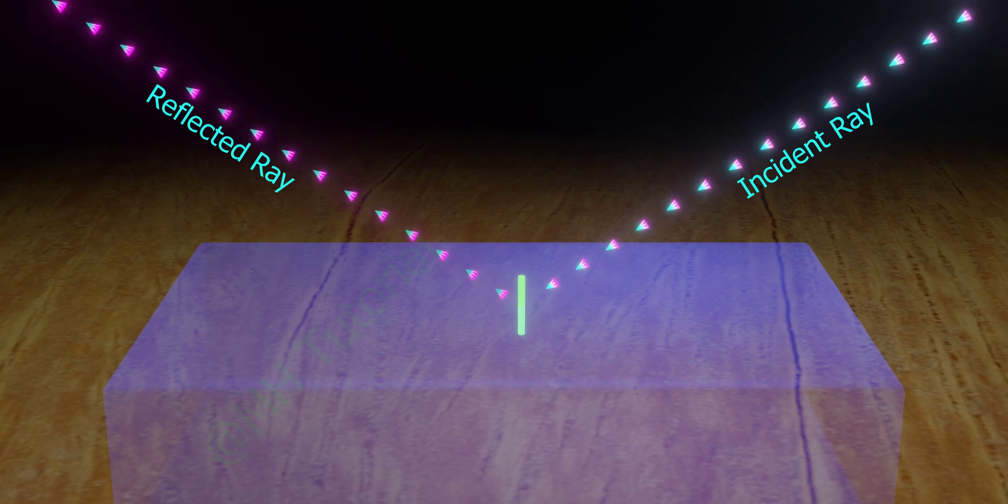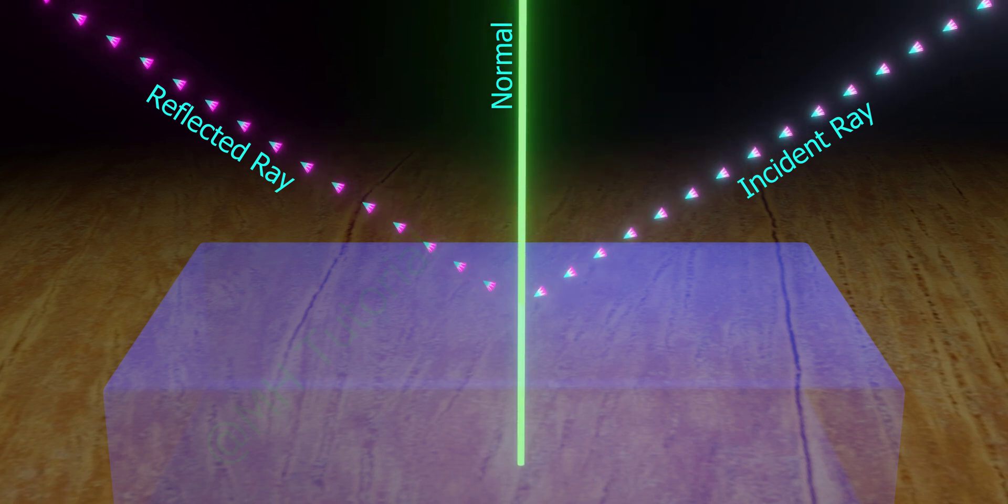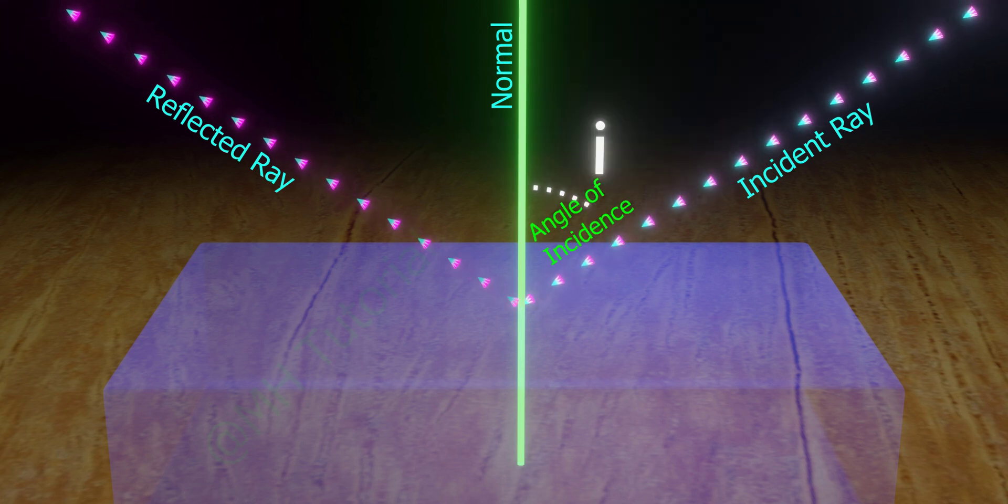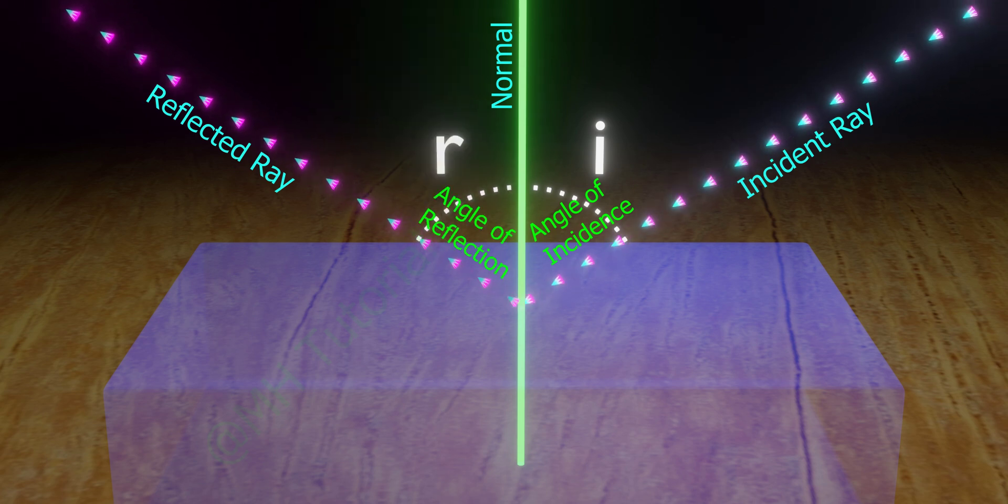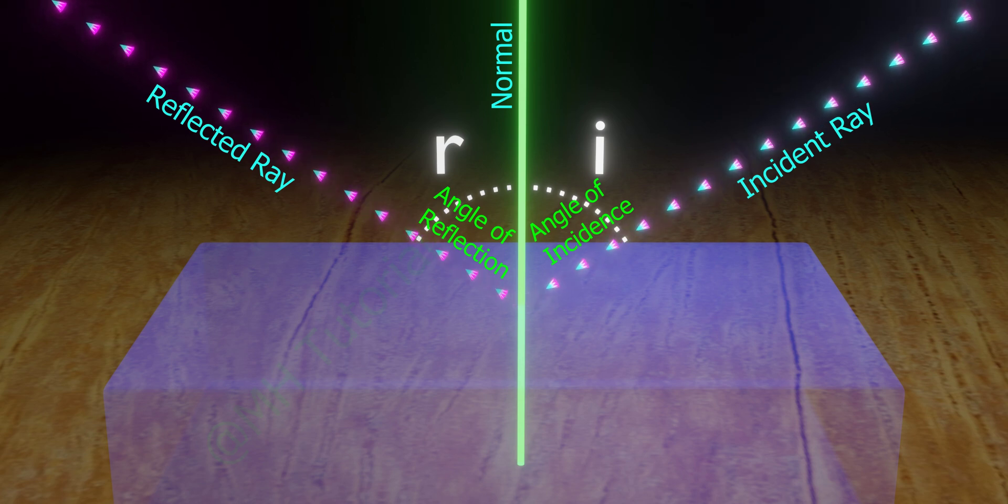A perpendicular to the plane at the point of incidence is known as normal. The angle between the normal and the incident ray is called angle of incidence, and the angle between the normal and the reflected ray is called angle of reflection.